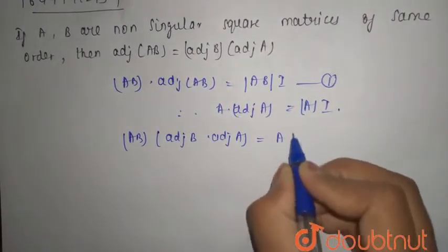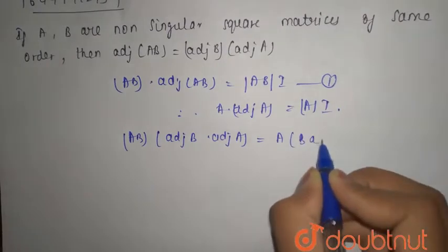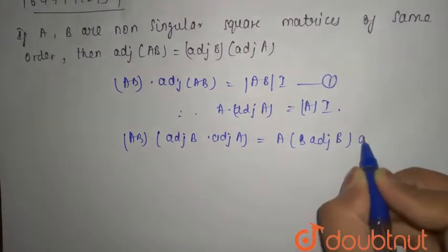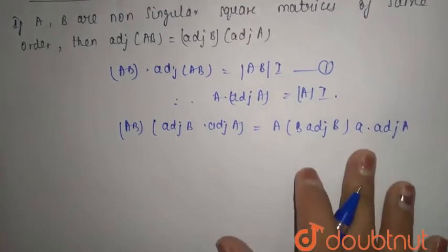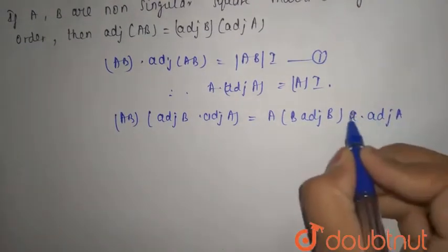Similarly, here you can write A into B adjoint of B, A into adjoint of A. That you can write here. This is only adjoint of A.